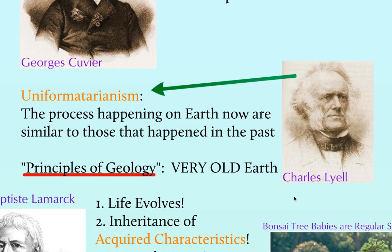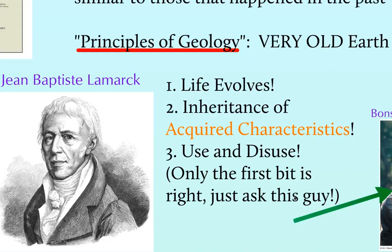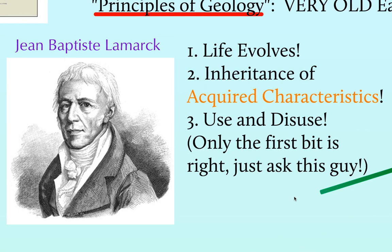Lamarck is actually one of the first to come up with a theory of evolution, but he makes this royal mistake. He believes that organisms can inherit acquired characteristics. So basically, if somebody weight lifts, their baby will be born with bigger muscles. We all know that's not correct, but they didn't understand the principles of genetics at that time. Darwin is the one that comes up with a better use of evolution and understanding these characteristics a little bit better.